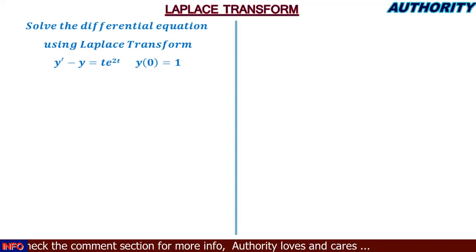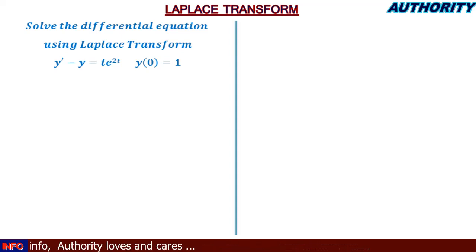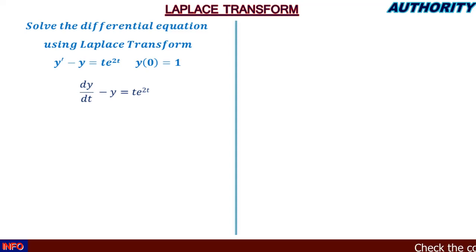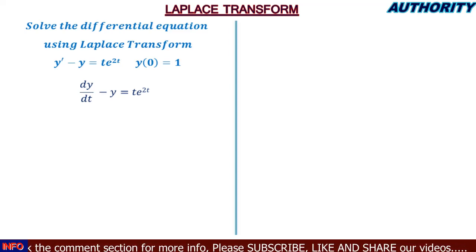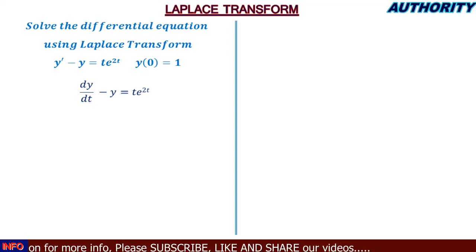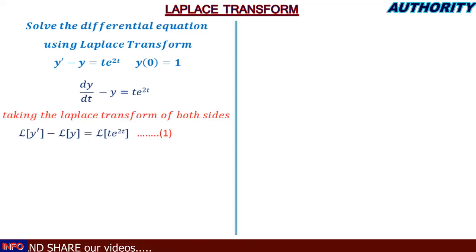Pay attention to this. You can recall that y prime minus y = t e^{2t} is the same as dy/dt minus y = t e^{2t}. Since the question says to use Laplace transform, we take the Laplace transform of both sides, taking individual transforms: L{y'} minus L{y} is equal to L{t e^{2t}}. Let's call this equation one.